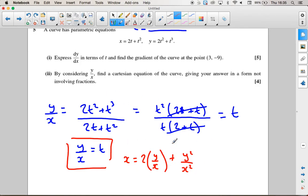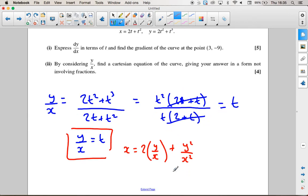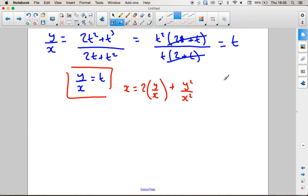So that's already a Cartesian equation, but it says giving your answer in a form that doesn't involve fractions. So now I've just got, I'm going to times everything by x squared, which will get rid of both fraction terms here.